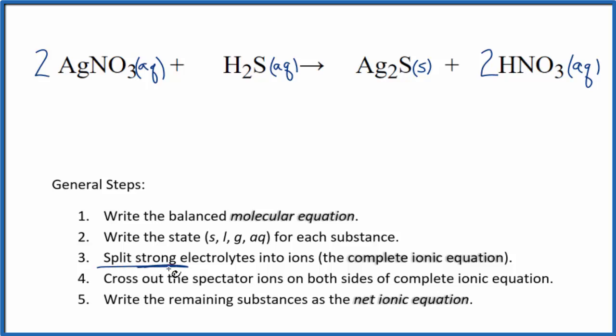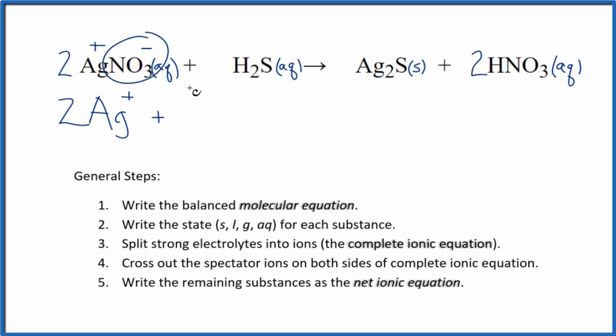Now we can split the strong electrolytes into ions. H2S, that's a weak acid, so it's a weak electrolyte. We won't split it apart. And this will give us the complete ionic equation. Silver is always one plus, and the nitrate ion is always one minus. Good one to remember. Two silver ions. I won't write the states now. Let's do that later. And then two of these nitrate ions, NO3 minus.